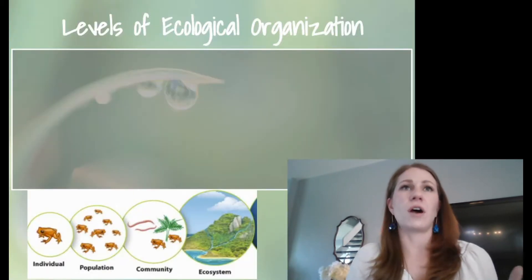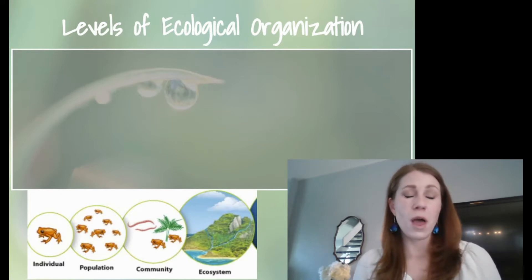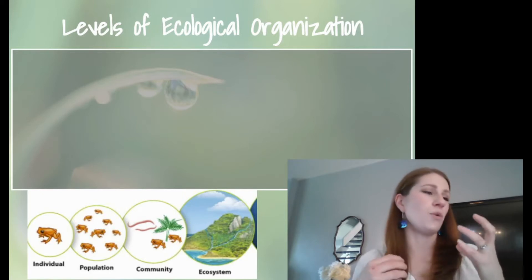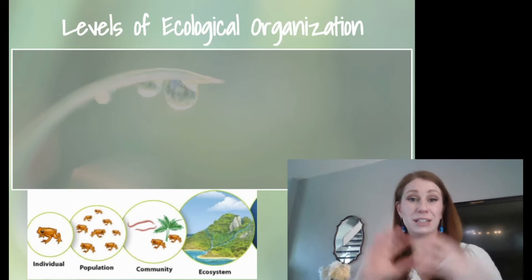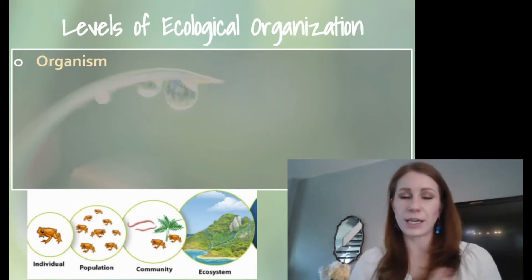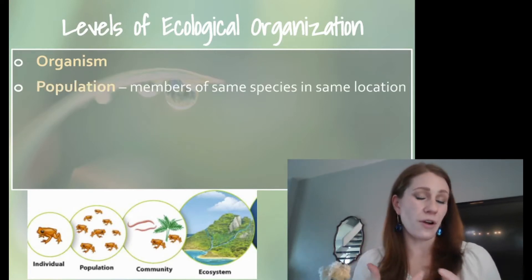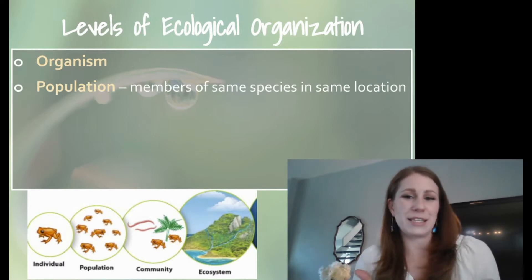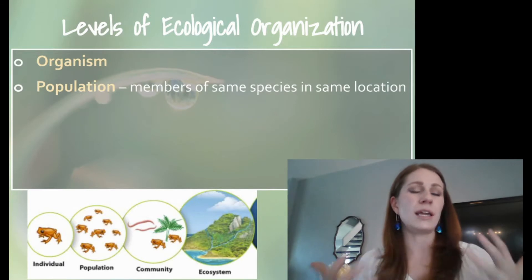I wanted to start this off because we haven't talked about our levels of organization in a while. There are more levels of organization than going just from cell to tissue to organ, organ system, and organism — we have to make it to the macro scale too. We have organisms like you and me; we're a singular organism. But when we get together, like in my classroom, I have 30 members of the same species in one location — 30 humans — so we are a population in one area.